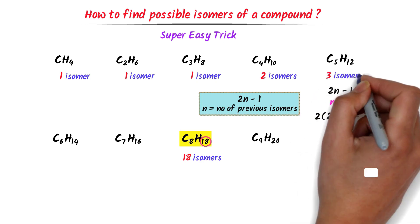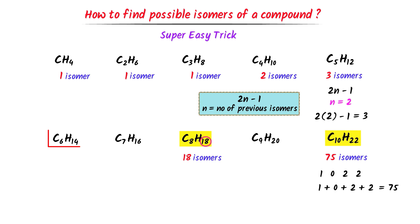In case of hexane, I use the formula 2n-1. The number of previous isomers is 3. Hence, n is equal to 3. I write, 2 times 3 minus 1 is equal to 5. Thus, hexane has 5 isomers.